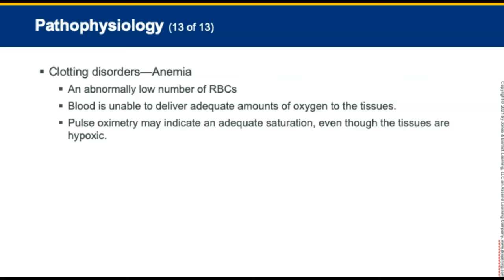Anemia is an abnormally low number of red blood cells. It can result from chronic or acute bleeding, deficiency in certain vitamins or minerals, or an underlying disease process. Blood is unable to deliver adequate amounts of oxygen to the tissues, and pulse ox may indicate adequate saturation even though the underlying tissues are hypoxic.